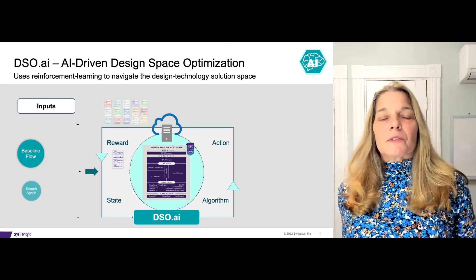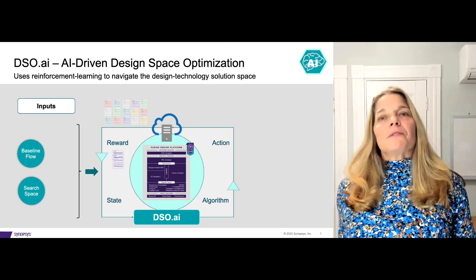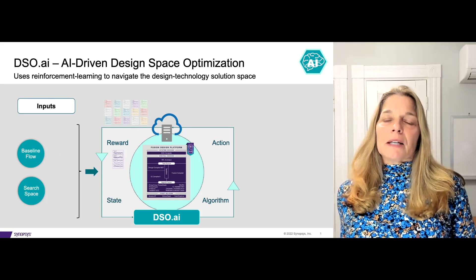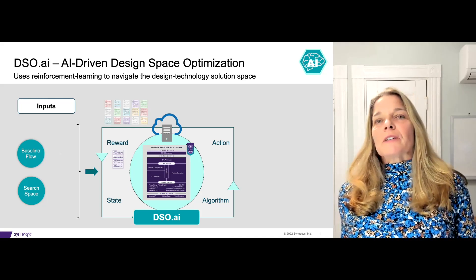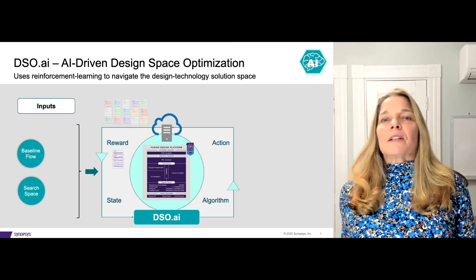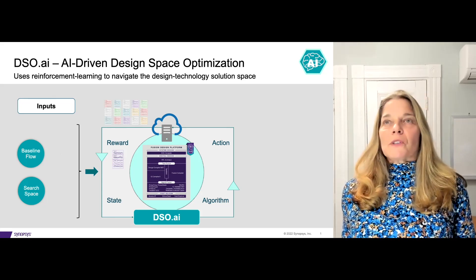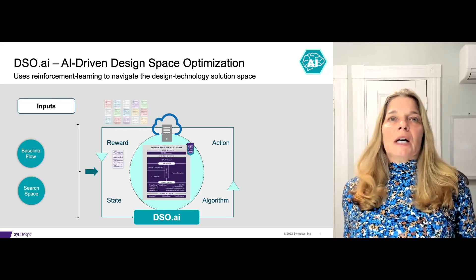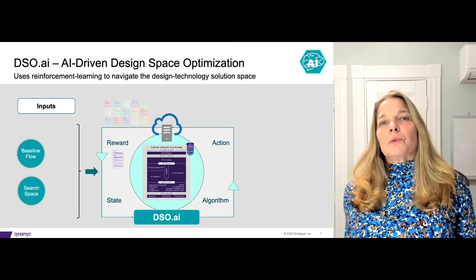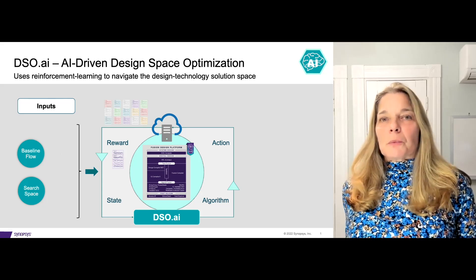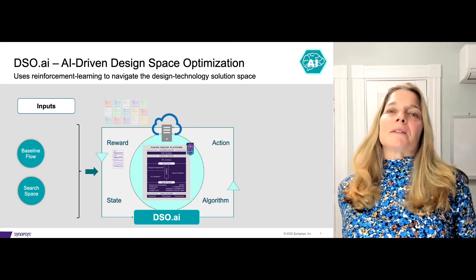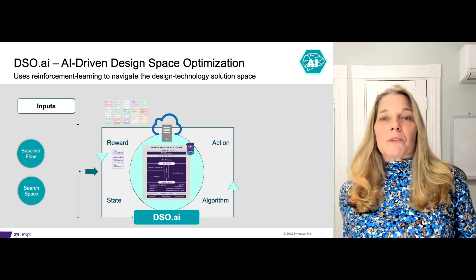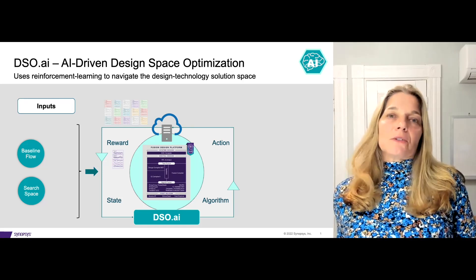The second input is the search space, defined by input parameters that DSO AI optimizes within a specified range. This is what designers spend their time tweaking to get the best PPA. It could be the tool settings, the design constraints, library or process parameters — anything you want the tool to permute on in the search space, which is why we call these parameters permutants. DSO AI will optimize the search space, and that frees up time for designers to focus on real design issues.